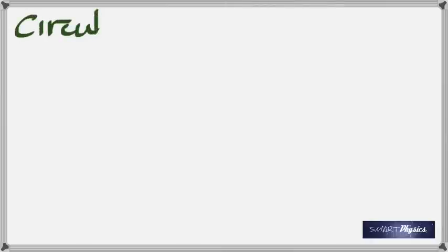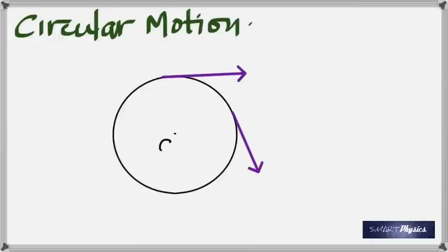Next is circular motion — an object moving in a circle. As shown in the diagram, the object rotates clockwise, and the arrows represent the velocity at any instant. The velocity is always along the tangent drawn to the circle at that point.